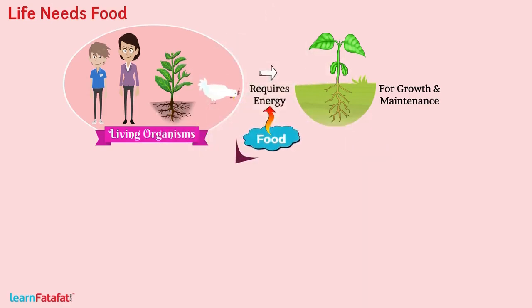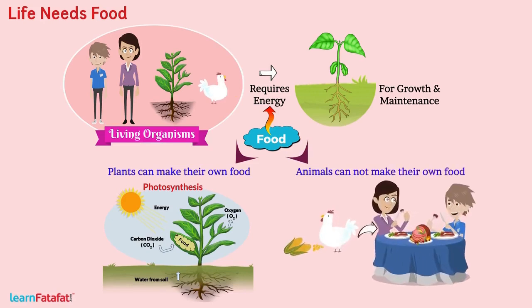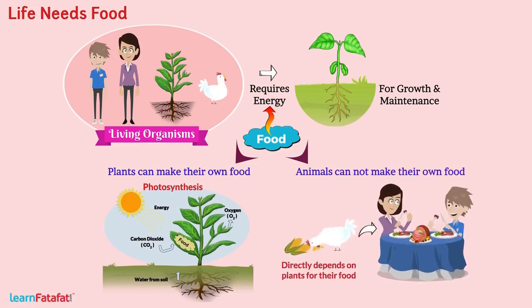Plants can make their own food by the process of photosynthesis. But animals, on the other hand, cannot make their own food. Instead, all animals depend directly or indirectly on plants for their food.